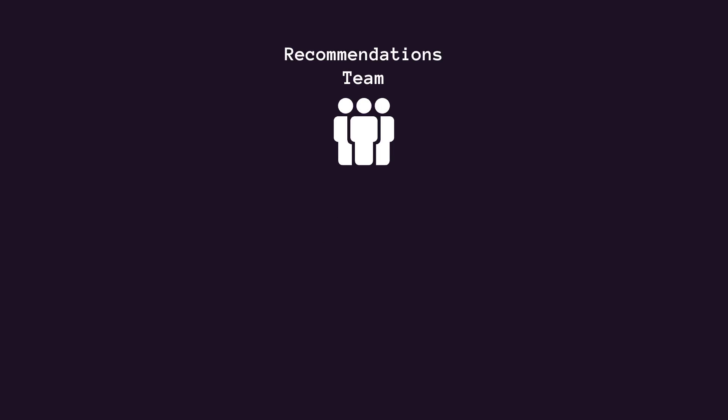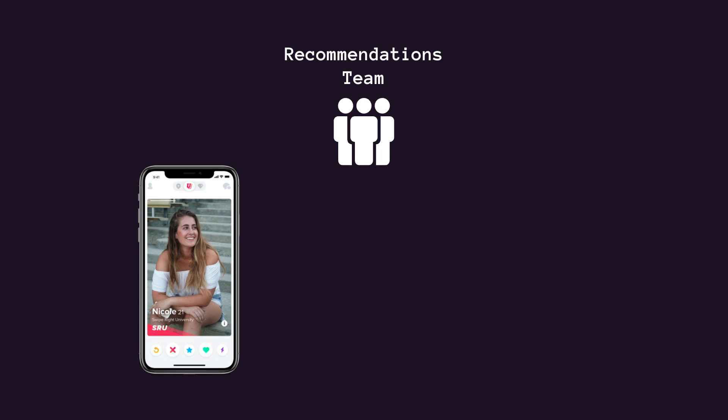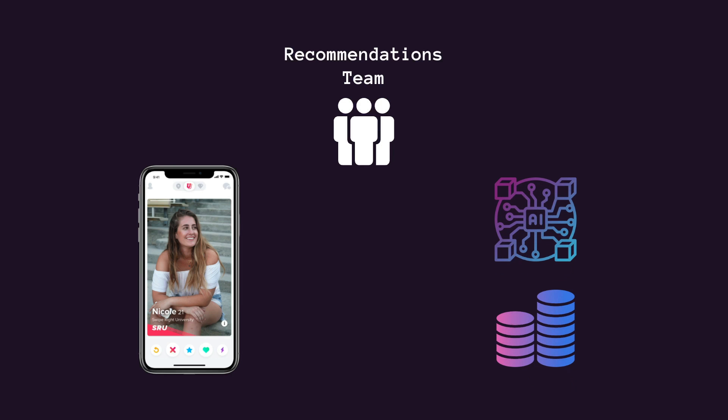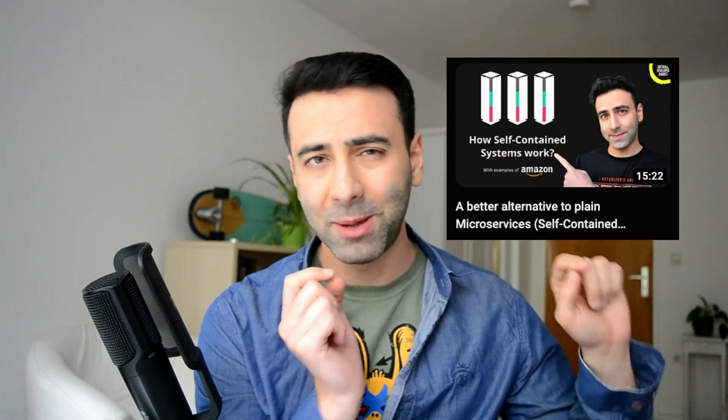For example, the recommendations team takes care of how recommended candidates show up on the client's phone and how the backend algorithm works and stores the data. If you've seen one of my previous videos on self-contained systems, you would probably recognize this pattern. Every end-to-end team is basically free to choose their own tech stack and architecture to fulfill a specific goal. But to better understand how Tinder was even able to maintain those 500 microservices in the first place, we're going to go back to the service mesh.